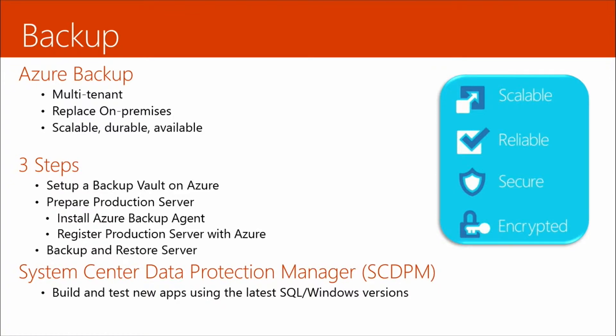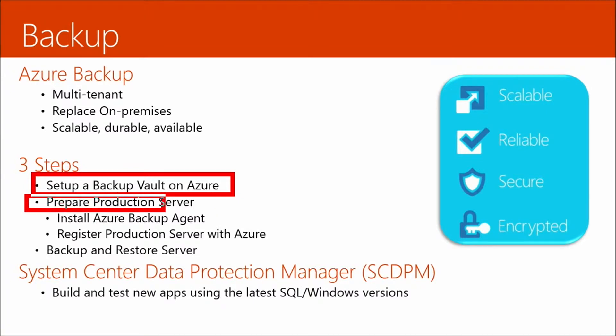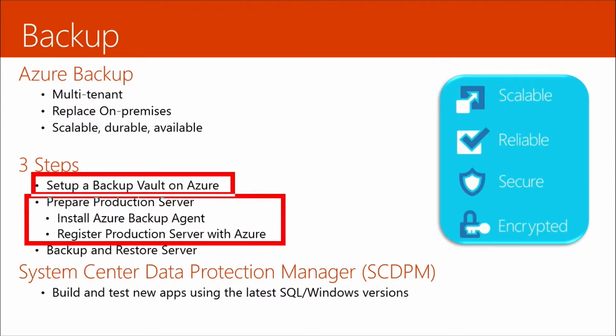To make this work, there are essentially three steps that you have to do. First of all, set up a backup vault on Azure. Then you would prepare your production server — to do that, you would install an Azure backup agent and then register that production server with Azure. And then you go through the process of backing up and restoring the server.